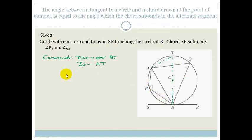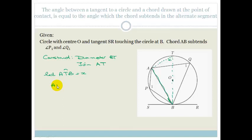Let angle ATB equal X. Now, what do we know about tangents and diameters? They are 90 degrees. So we can say angle ABS plus angle ABT equals 90 degrees, because the tangent is always perpendicular to the radius.